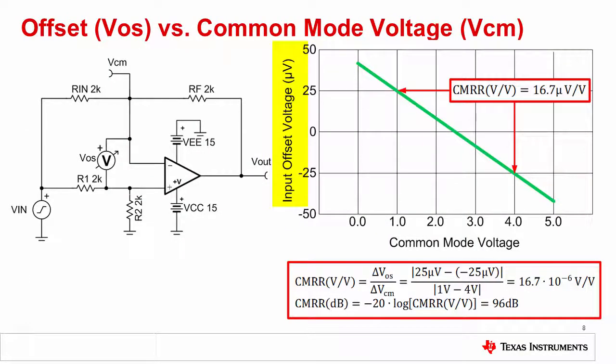Graphing the input offset voltage versus common mode voltage for an op-amp will generally produce a linear function as shown in this graph. Of course, there are some exceptions, and we will look at one soon. Notice that the slope of the straight line is equal to the common mode rejection of the device.